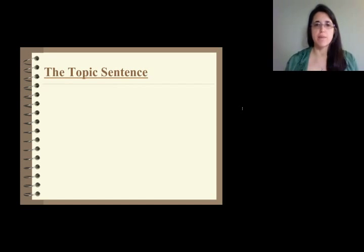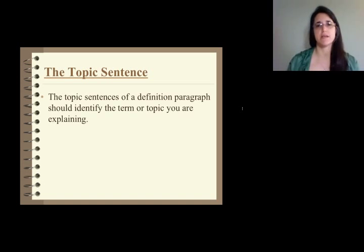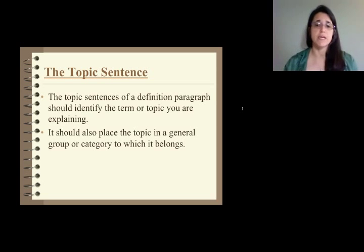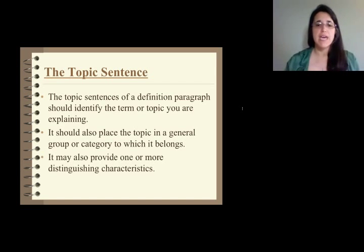Let's look at the main and primary piece of our definition paragraph, and that's going to be our topic sentence. Remember we have been talking about the formula for our topic sentence. We need number one, our topic. Number two, our pattern of organization. And number three, the point or argument that we're trying to make. Our topic sentence must have the term or topic we're explaining. It should also place the topic in a general group or category to which it belongs. If we say that a trout is a fish, we're starting to define it and put it into a category. It may also provide one or more distinguishing characteristics, but we have to be very careful we don't go into that pattern of description.